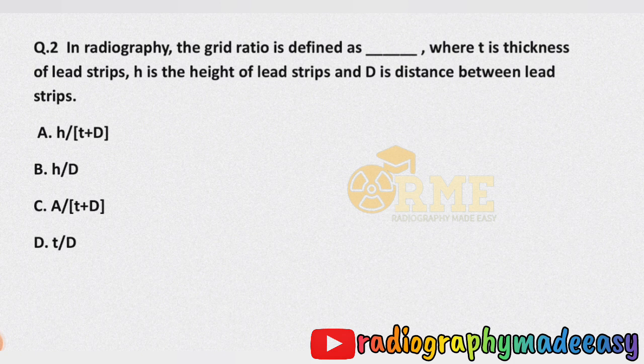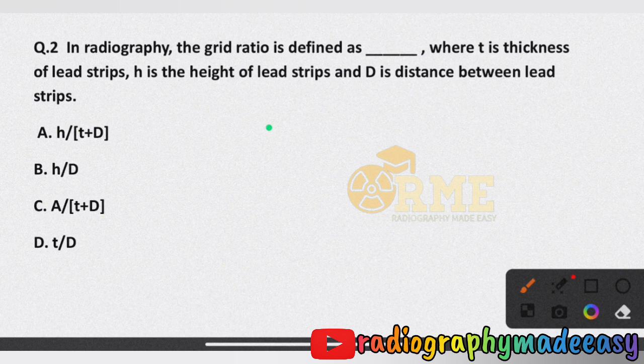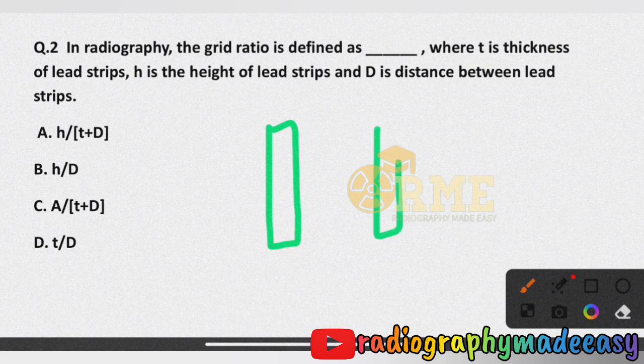Question number 2: in radiography, the grid ratio is defined as — where T is the thickness of lead strips, H is the height of lead strips, and D is the distance between lead strips. To understand grid ratio, imagine these are lead strips with height H, and D is the distance between two lead strips.